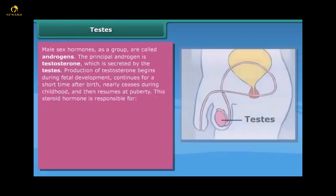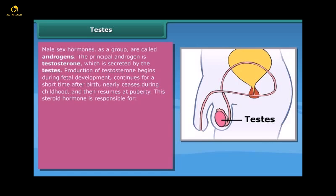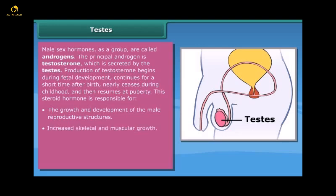Testes: male sex hormones as a group are called androgens. The principal androgen is testosterone, which is secreted by the testes. Production of testosterone begins during fetal development, continues for a short time after birth, nearly ceases during childhood, and then resumes at puberty. This steroid hormone is responsible for the growth and development of the male reproductive structures, increased skeletal and muscular growth, enlargement of the larynx accompanied by voice changes, and growth and distribution of body hair.